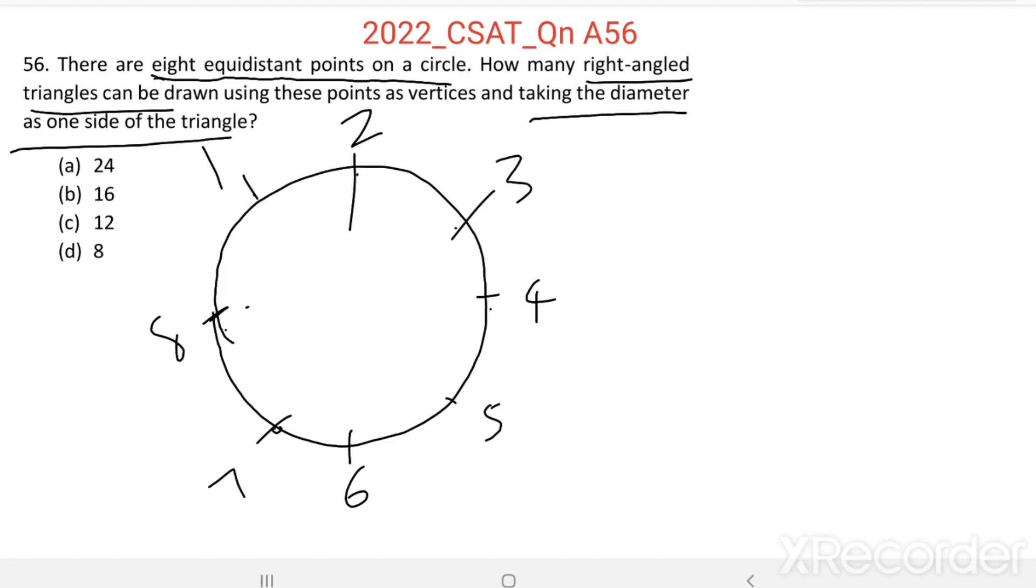Any two opposite points joining gives us a diameter. So, this is the first diameter. Then 6 and 2, we get the second diameter. Then 1 and 5, we get the third diameter. 8 and 4, we get the fourth diameter. So, four such diameters are possible.